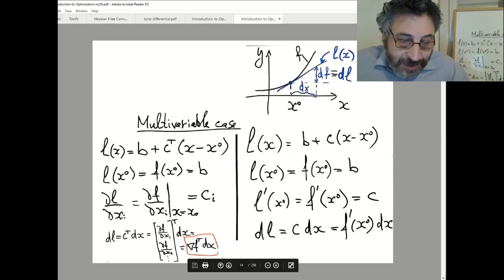And so vector c. So components of vector c are partial derivatives. So vector c itself is a vector of partial derivatives. What we will call gradient. So it's gradient transpose multiplied by dx. What is written here?